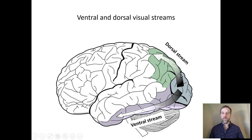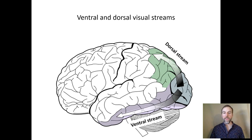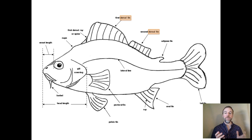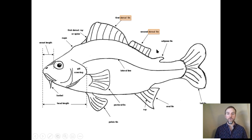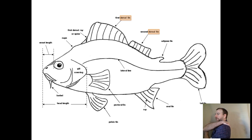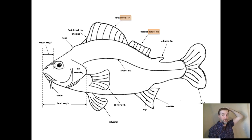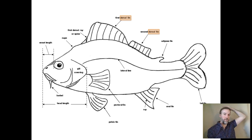Why is the parietal lobe the dorsal part of the brain? It doesn't make as much sense in humans because our head is rotated compared to most other animals. If you think of a fish, its head is straight with its body. The fins on the back of a fish are the dorsal fins. If you keep going up the back toward the brain, you get to the top — so although this is the top of my head, this is the dorsal part of my brain, and that's why the dorsal stream is up here.